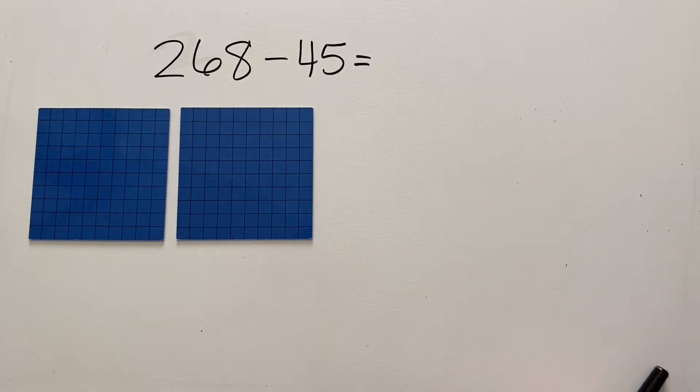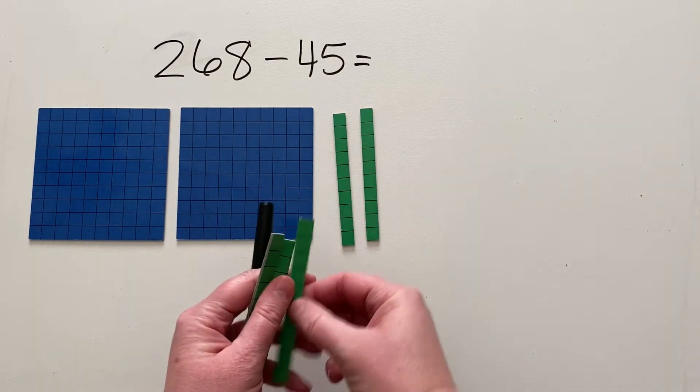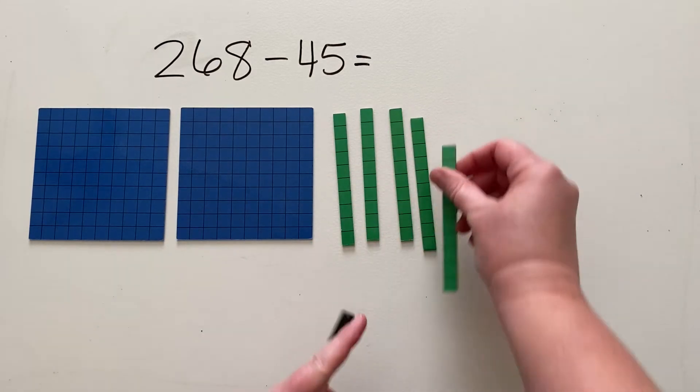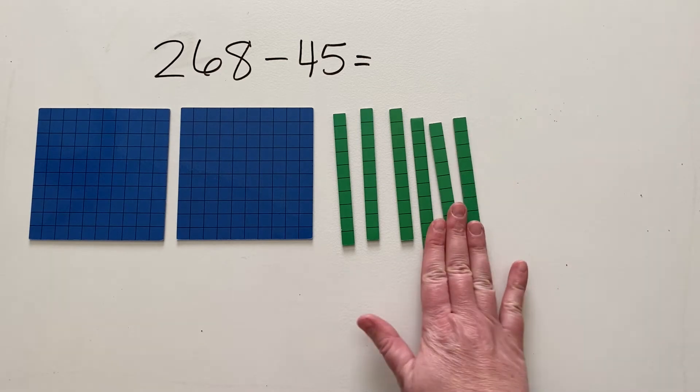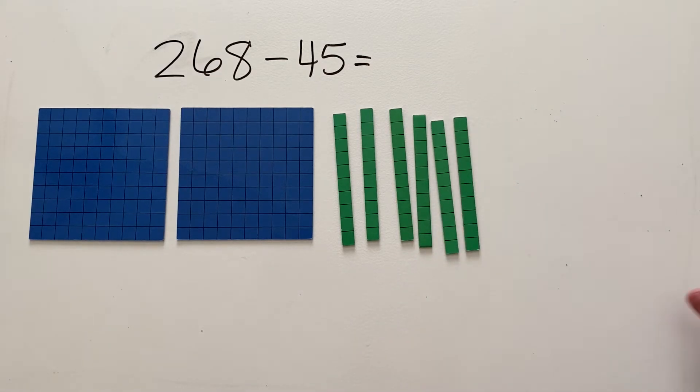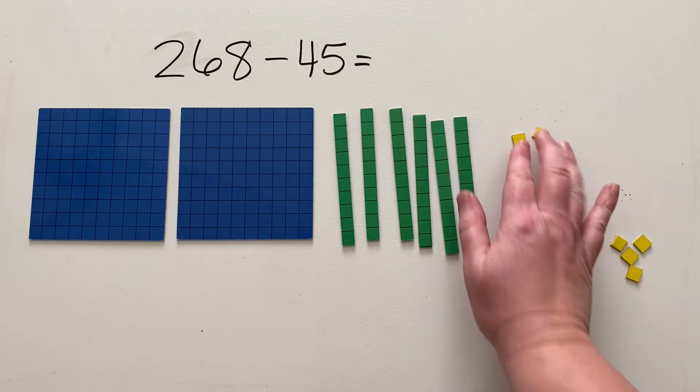For our tens, we have 6 tens. So we have 1, 2, 3, 4, 5, 6, showing 60.